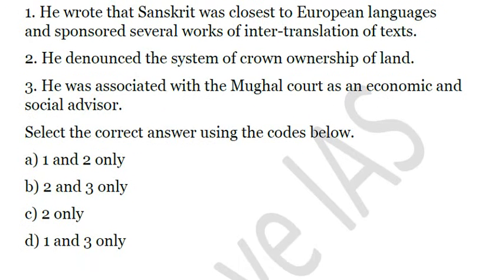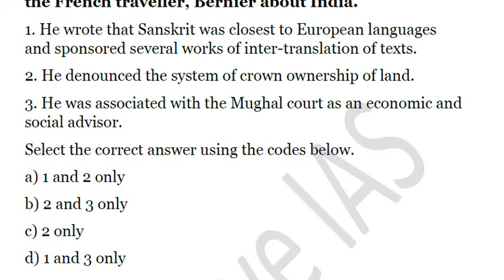The solution is C. The first statement was not the view of Bernier; rather it was the view of Al-Baruni, who wrote that Sanskrit was closest to European languages and sponsored the inter-translation of texts. So that refers to Al-Baruni, not Bernier, the French traveler. The second statement is associated with Bernier — he denounced the crown ownership of land, saying land was owned by the crown and subdivided into multiple parts given to nobles, who in turn gave it to cultivators.